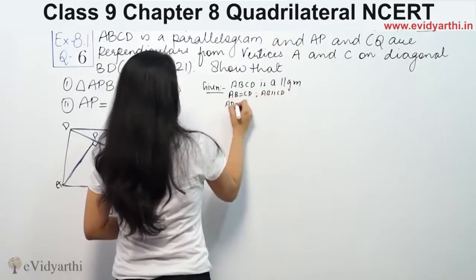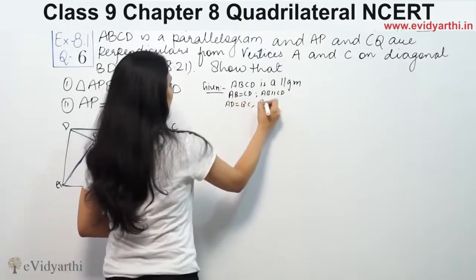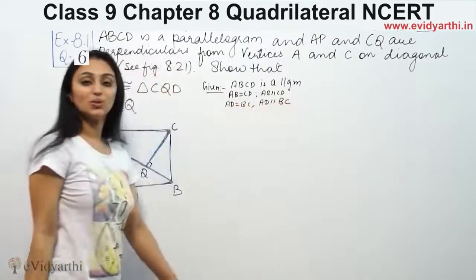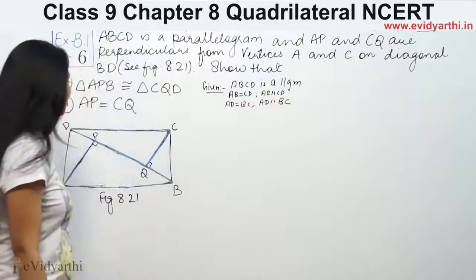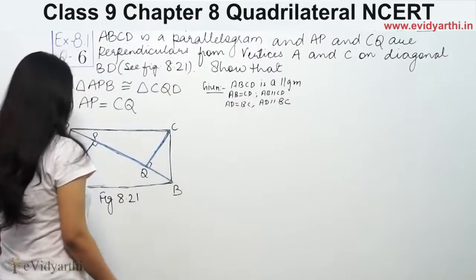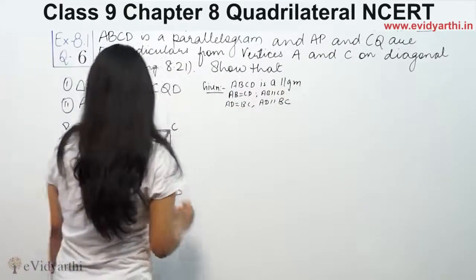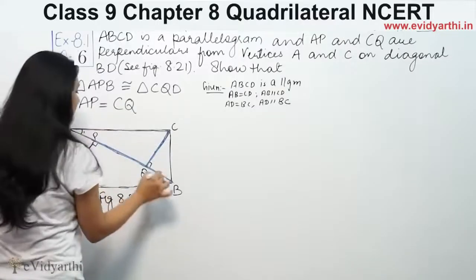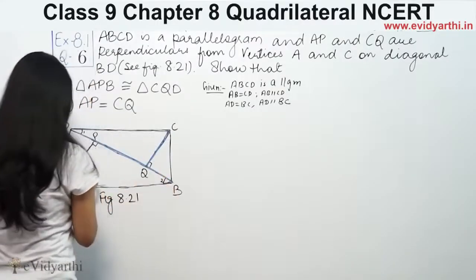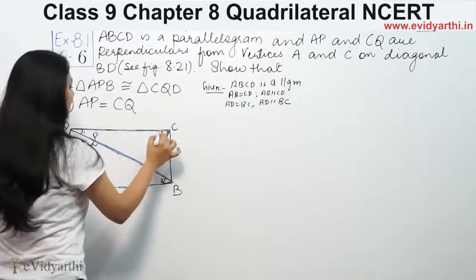And AB is equal to BC and AB is parallel to BC. So we have to label this angle 1, this is angle 2, this is angle 3, this is angle 4.